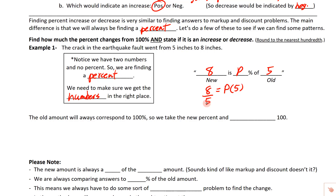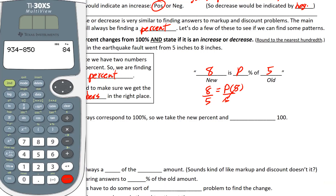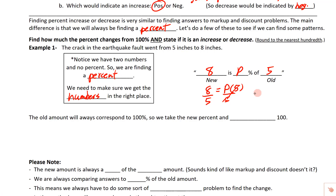We divide both sides by five and grab the calculator. Eight divided by five equals 1.6. Since P stands for percent, we move the decimal two places, giving us 160%. That is the answer to the equation — not the final answer to the problem. We're always comparing to 100%, which represents the old amount. The new value is 160% of the old value.